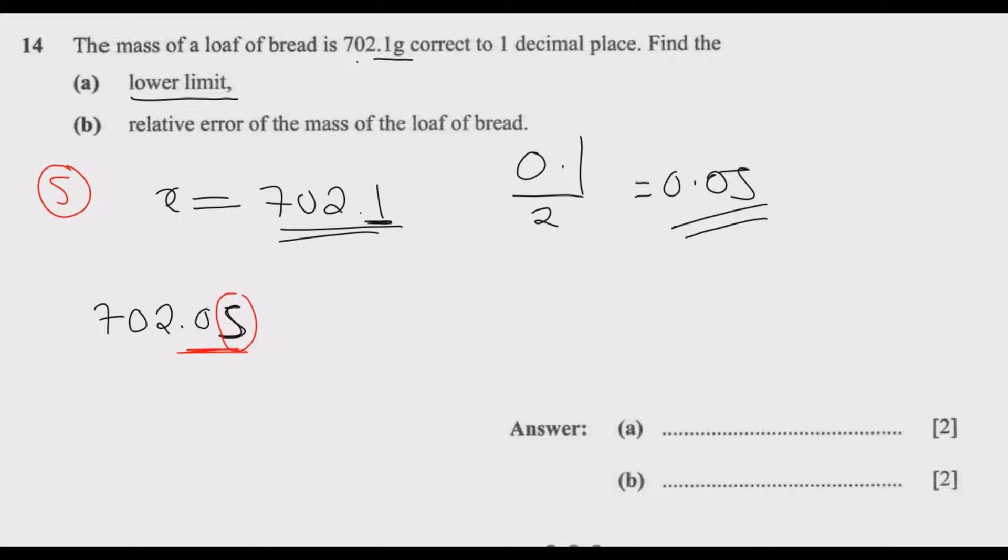When correcting to one decimal place, I'm going to add a 1 here, then I get back to 702.1. But if this number was 702.04, because 4 is less than 5, even if I were to correct to one decimal place, this number becomes just 702.0.